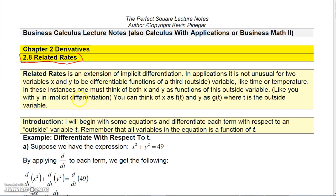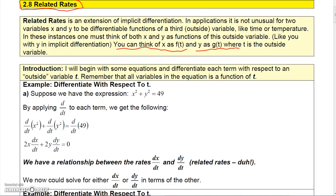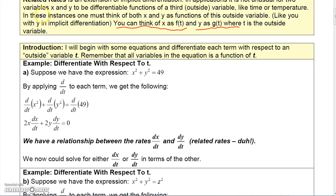If t is the outside variable or parameter, you could think of x as f(t) and y as g(t), so x and y are both functions of t. I'm going to begin with some equations and differentiate each term with respect to this outside variable. Remember that all variables in the equation should be thought of as functions of another variable t.